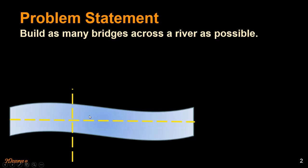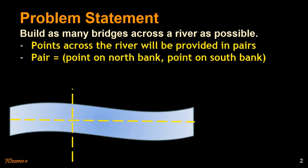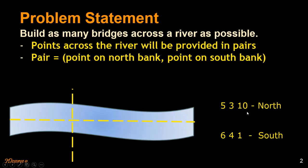We have an x-axis and a y-axis. We are given a set of points across the river in pairs. Each pair consists of a point on the northern bank and a point on the southern bank. For example, we have points 5, 3, 10 on the northern bank and 6, 4, 1 on the southern bank. Notice that these are only the x-coordinates — we don't care about the y-coordinates in this problem.